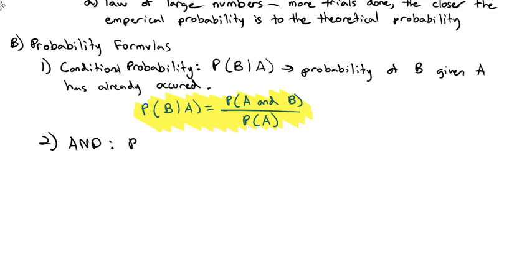Those are our three probability formulas. Conditional probability is the probability of both divided by the given information. For AND we multiply the probabilities together given the first one has already occurred. For OR we add them together and subtract off the overlap. Let's do an example — we have three blue cards numbered 1, 2, and 3, and two yellow cards numbered 1 and 2.